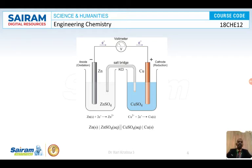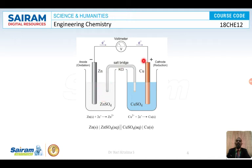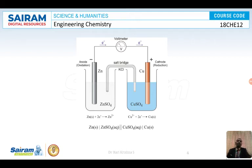The Daniel cell contains a zinc electrode dipped in zinc sulfate solution and a copper electrode dipped in copper sulfate solution. These two are connected through a salt bridge to maintain electrical neutrality, and the zinc and copper electrodes are connected through a voltmeter. Zinc dipped in zinc sulfate forms one half cell; copper dipped in copper sulfate forms another half cell. Any metal dipped in its own salt solution acts as a half cell.